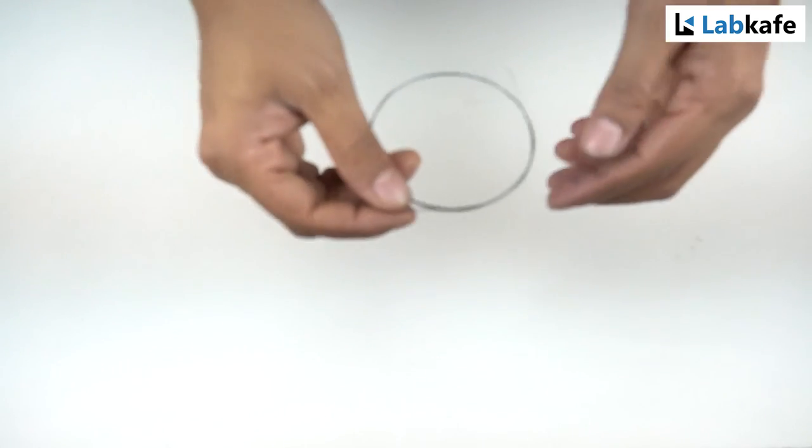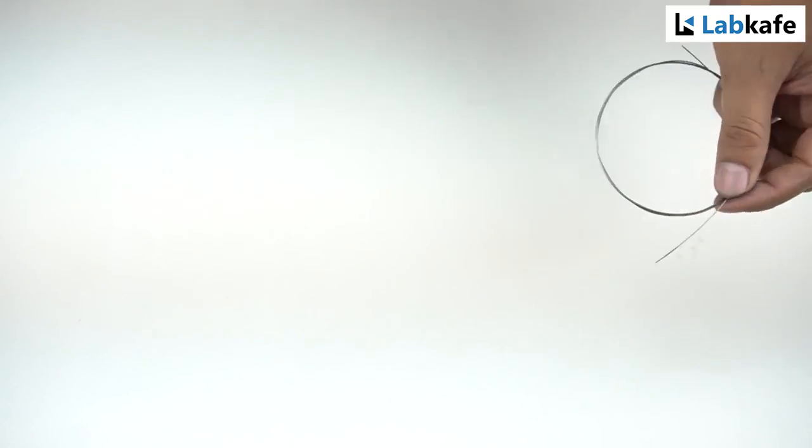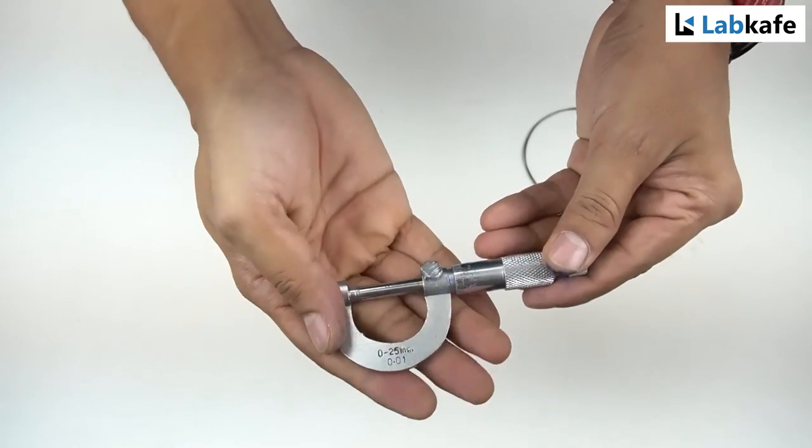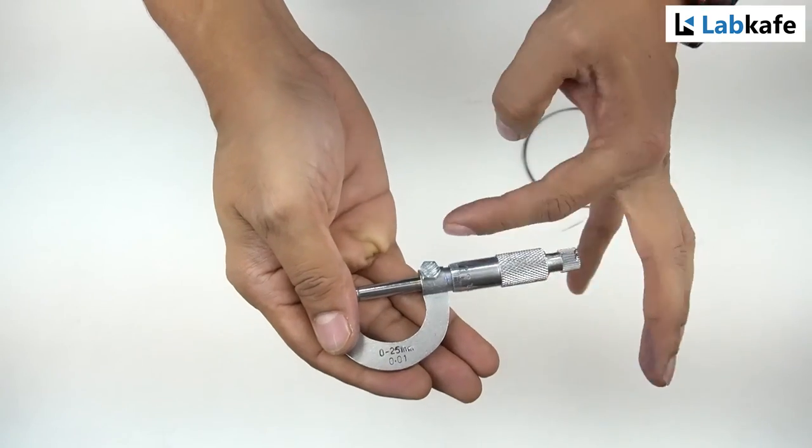We have to measure the diameter of the given wire. This is the steel wire. To do so, we need a screw gauge. This is our screw gauge. As you can see, the screw gauge has a circular scale having 50 divisions on it.